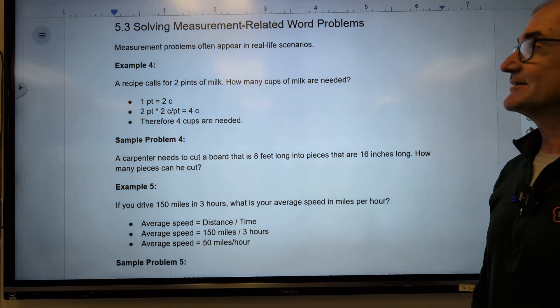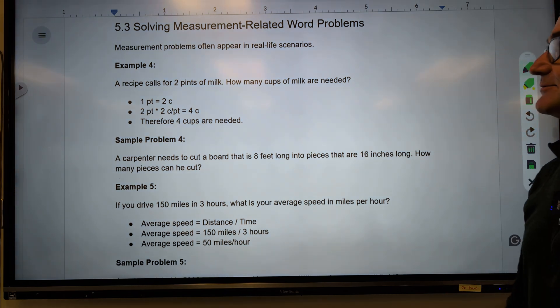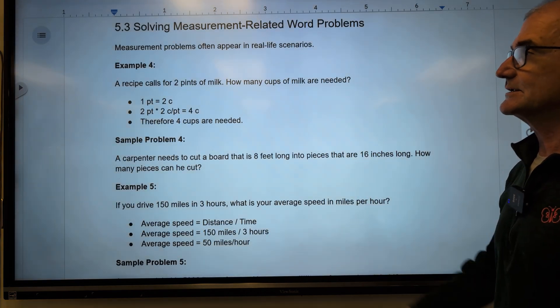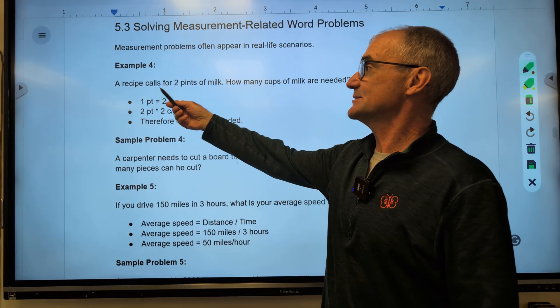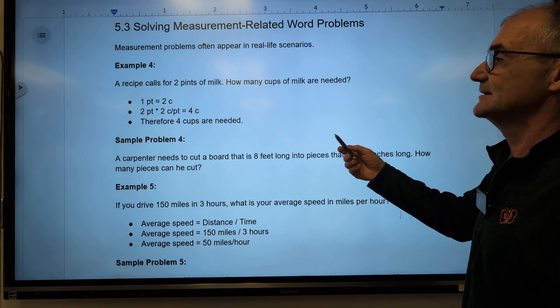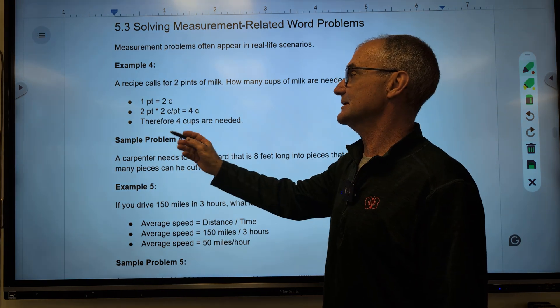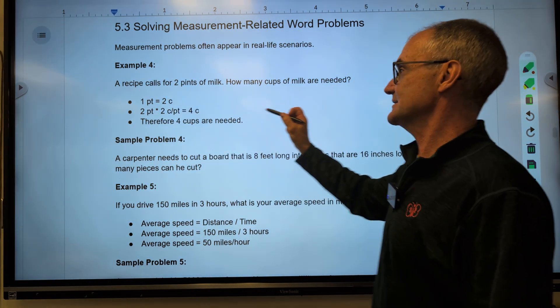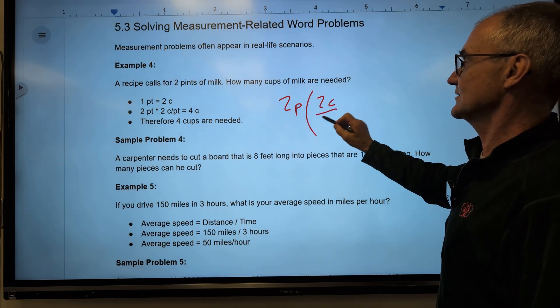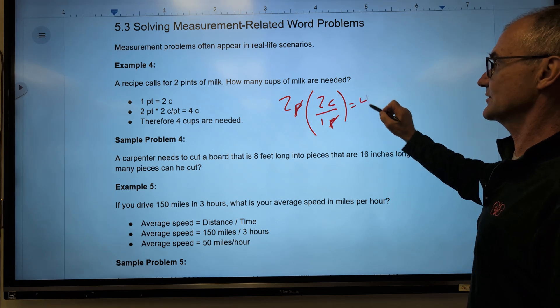Okay, section 5.3, solving measurement real-life problems. So these are all unit conversions. This big idea of multiplying by one is an important one. So here's one right here. Recipe calls for two pints of milk. How many cups of milk are needed? Usually you're given conversions on this, but there are two cups to the pint. So if you have two pints, and you know there are two cups to the one pint, pints will cancel and give you four cups.